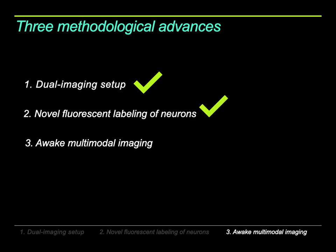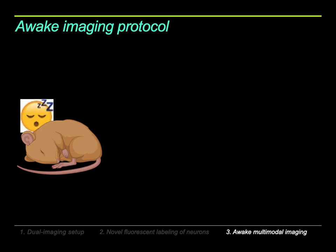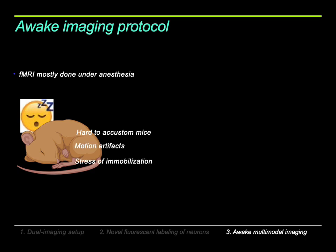Now I'll describe the new method I developed for training animals to be awake in the scanner. Most rodent fMRI is conducted under anesthesia because motion is one of the biggest problems in MRI, and mice are very hard to accustom to being awake in the scanner without excessive stress or movement. However, anesthesia affects the brain in ways that are not even completely understood, and human fMRI is mostly conducted in awake conditions — making the shift toward awake imaging in rodents increasingly important.